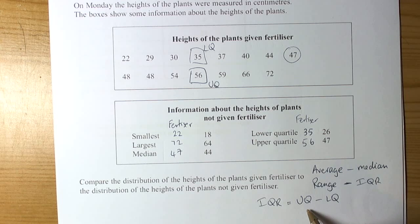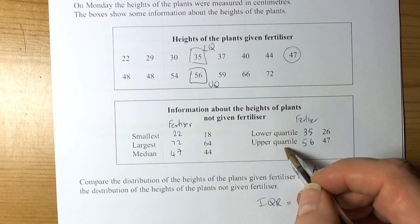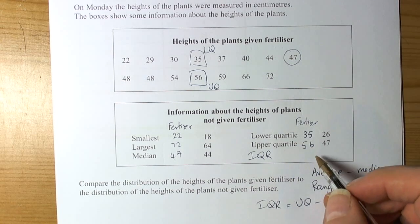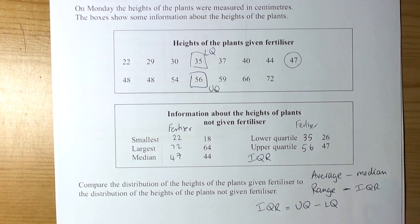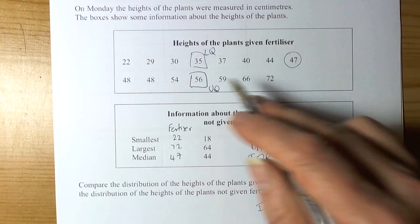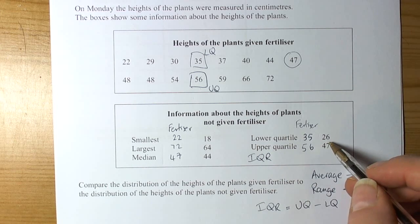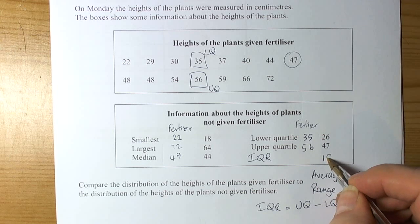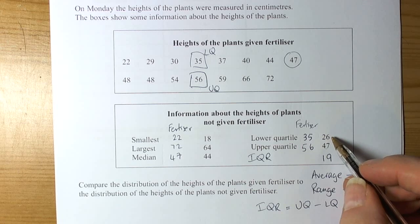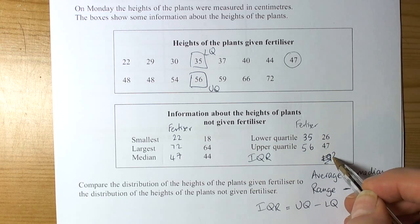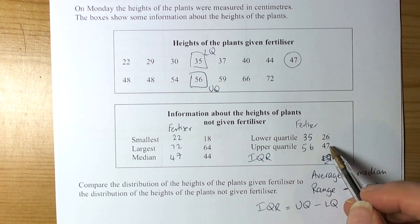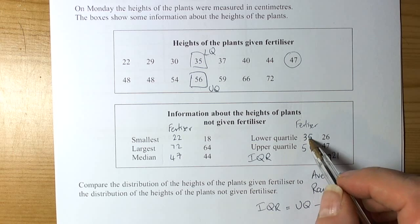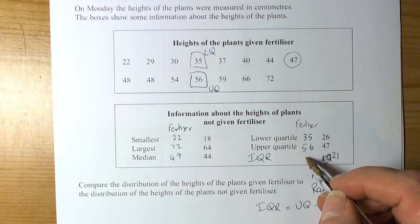The interquartile range is calculated by doing the upper quartile value minus the lower quartile value. We'll write IQR here to keep the data neat and tidy, as examiners will look for information within your workings. For the non-fertilized plants, we have 47 take away 26, which is 21. For the fertilizer plants, we've got 56 take away 35, which is also 21.